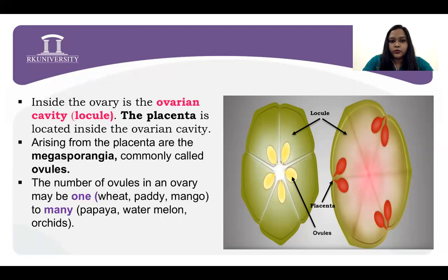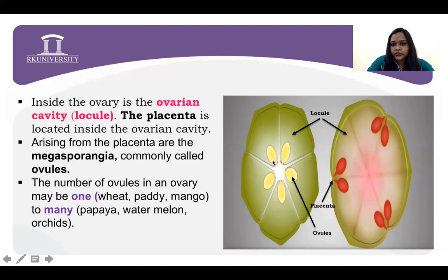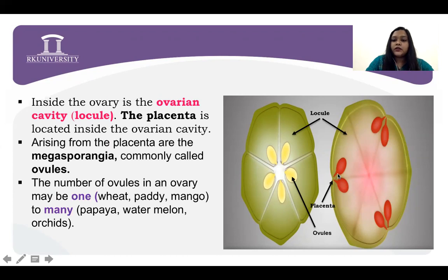Do you know how many types of placentation there are? What we are observing here is called axile placentation — why axile? Because it is at the inner axis, in an axile position. Here is parietal placentation — why parietal? Because it is situated at the periphery of the locule. So on the basis of where the placenta is present, from where the ovule is generated, that is called placentation.